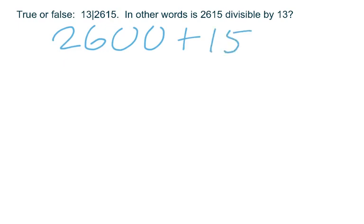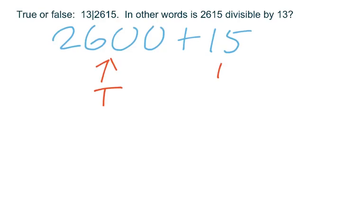And if you look at the list of properties that you might see in your book, you'll see another one that says that if 13 does divide 2600, if that's true, but 13 does not divide 15, that's false, then the statement that 13 divides 2615 has to be false. 13 does divide 2600, but 13 does not divide 15. So if 13 doesn't divide into both of those numbers, then overall, this statement has to be false. And I hope that was helpful. Thank you very much.